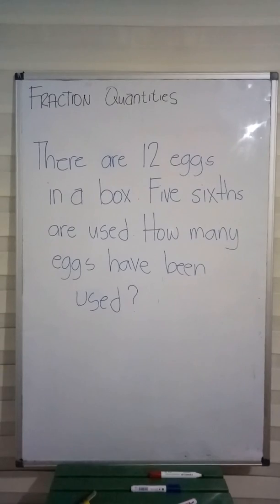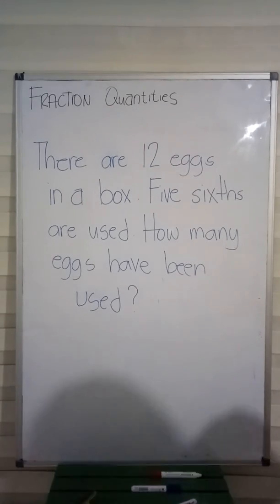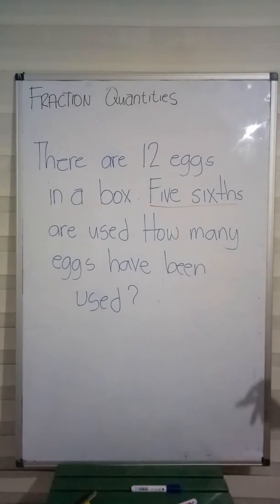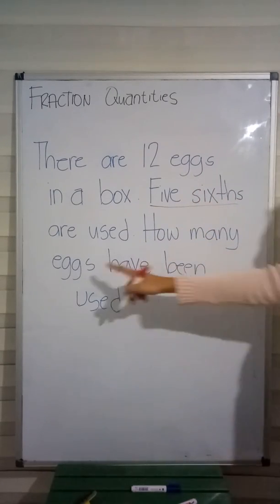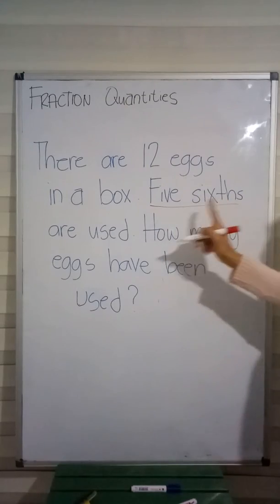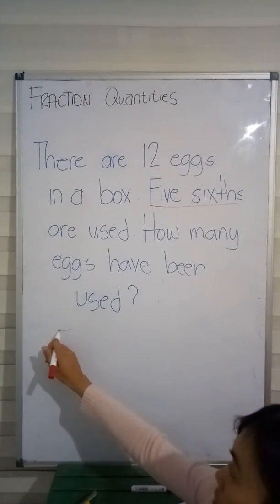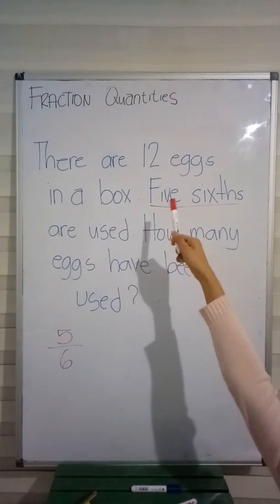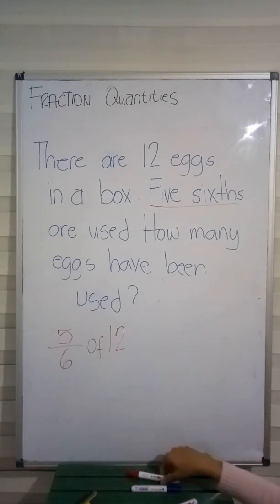On the word problem on the board, it says: there are 12 eggs in a box. 5 sixths are used. How many eggs have been used? Check and understand the sentence. You might ask, there's no fraction here — but if you read the sentence properly, the second line says 5 sixths, and the total eggs are 12. So the question is how many eggs have been used. The second sentence says 5 sixths are used, so therefore we need to find 5 sixths of 12 eggs.